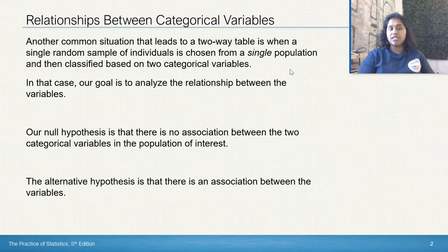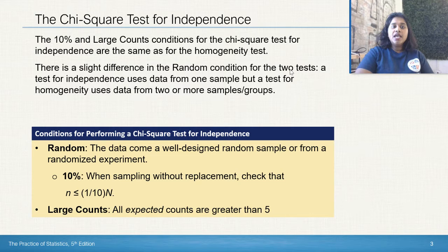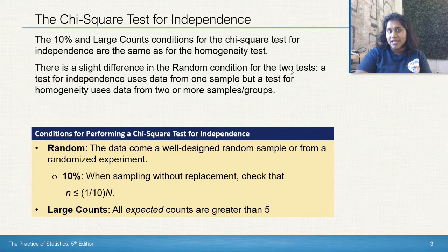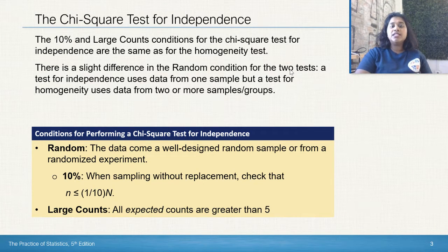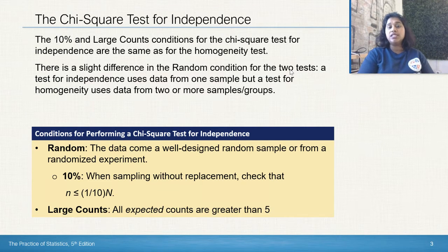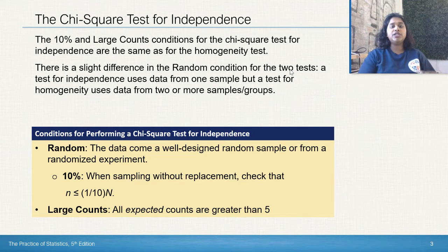Here is a stem sentence for our null and alternative hypotheses. The conditions for being met are exactly the same, except for random. With a test for independence, you use data from a single sample. In our previous video on the test for homogeneity, you would have data from two or more actual samples or groups.